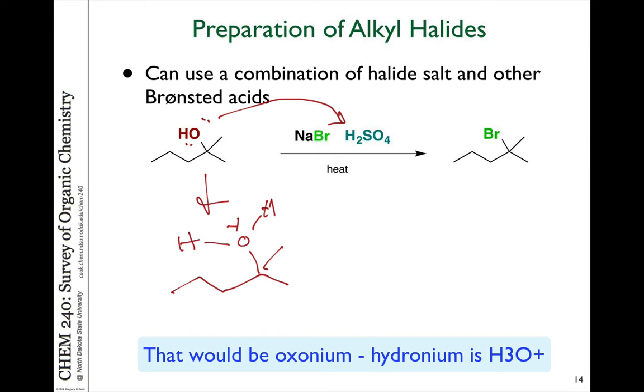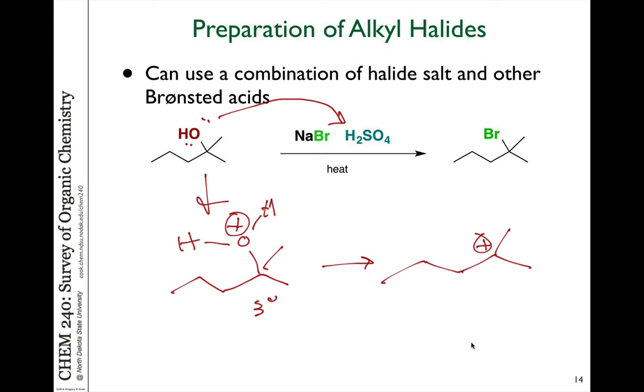It doesn't matter how we make the hydronium ion, because if we make the hydronium ion on a tertiary carbon center, it will undergo elimination to form the plus charge. And then our bromide coming from sodium bromide can react to form the product. So it's not necessarily the case that you have to have HBr itself to do the reaction. You can provide a bromide salt plus some other form of a protic acid.